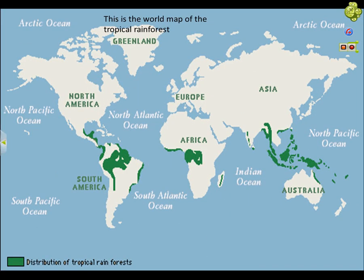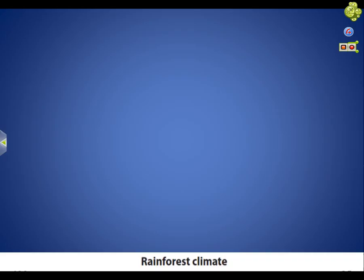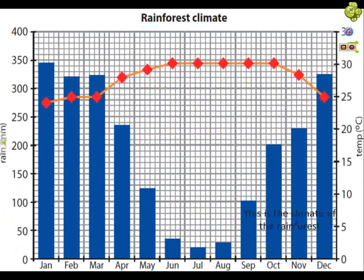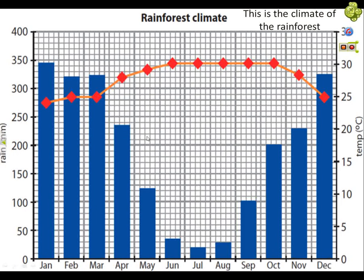This is the world map of the tropical rainforest. This is the climate of the rainforest. What did the rainforest get a lot of? Rain. Okay, so talk about rain.